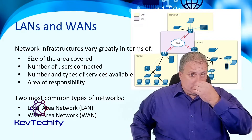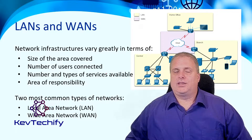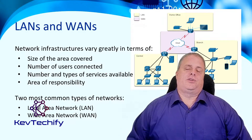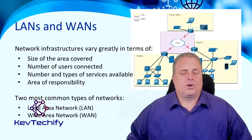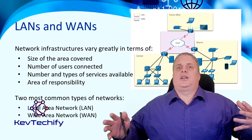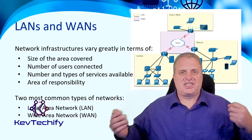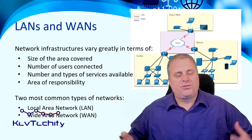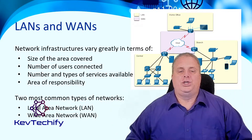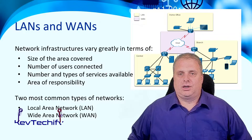Now as we get into it, we're going to talk about LANs and WANs — Local Area Networks and Wide Area Networks. Networks can vary greatly in infrastructure and the size of the area covered, from a small home office all the way up to networks spanning hundreds of thousands of users across multiple buildings, countries, states, and cities, all working together for the company.